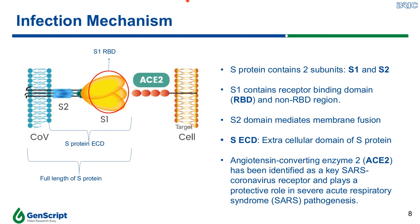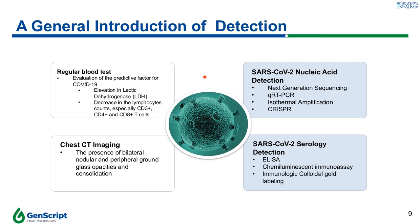With an understanding of the SARS-CoV-2 structure, researchers have developed several types of detection assays. First, the nucleic acid-based detection method, including next-generation sequencing, qRT-PCR, isothermal amplification, and CRISPR. Second, serology-based detection assays, including ELISA, chemiluminescent immunoassay, and colloidal immunoassay, can also be used to detect the antigen or antibody in the sample.